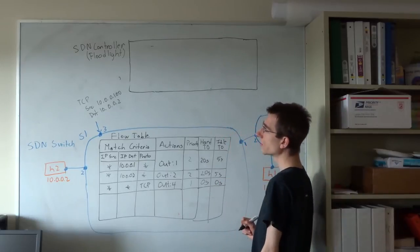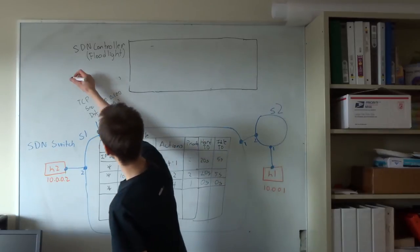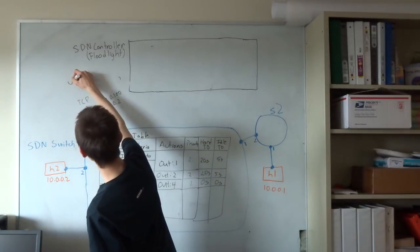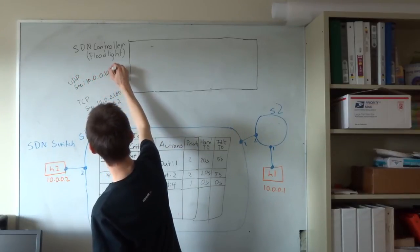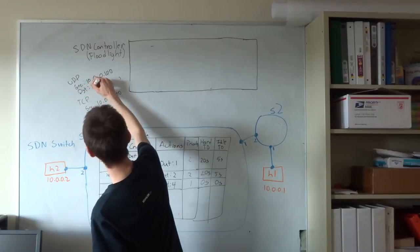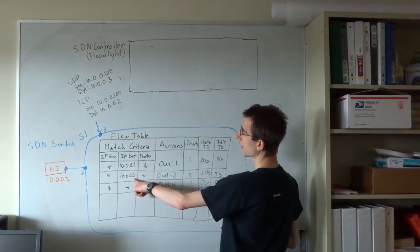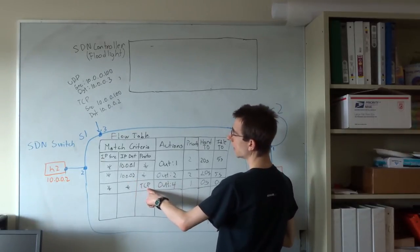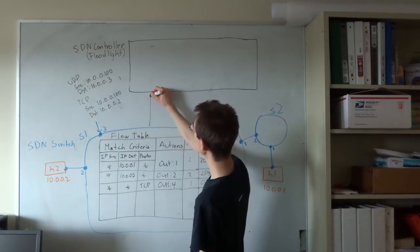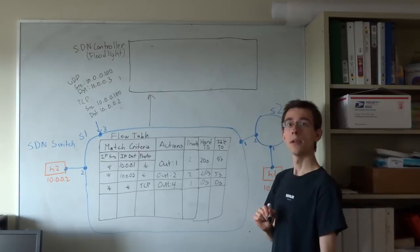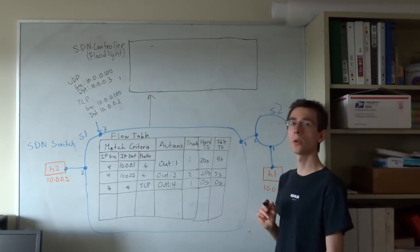Now, let's assume that we get a packet that doesn't match any of these particular rules. We'll assume it's a UDP packet whose source is 10.0.0.100 and whose destination is 10.0.0.3. We're not going to match any rules based on destination or protocol. In this particular case, the default behavior of the switch is to send this packet to the SDN controller.